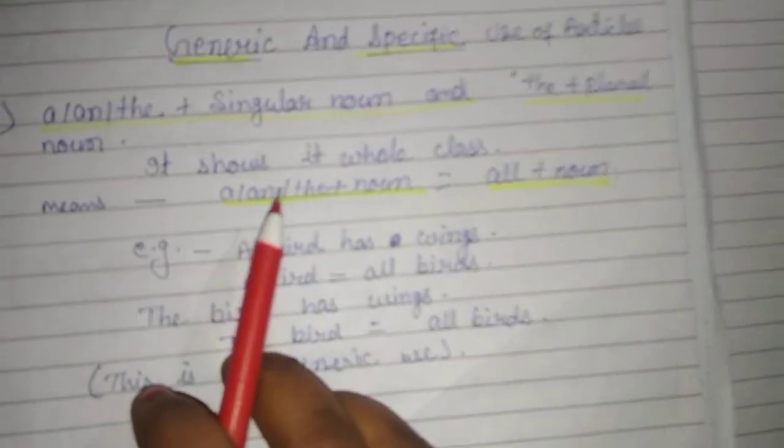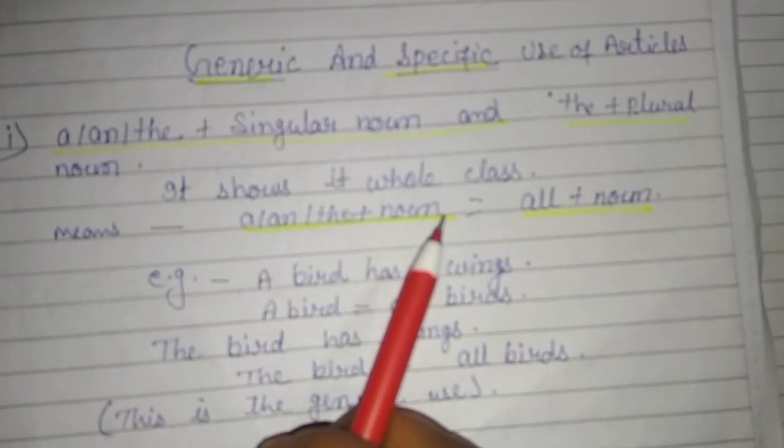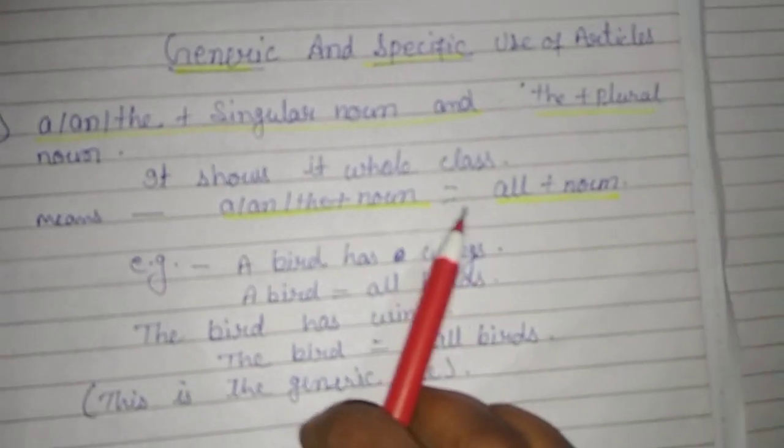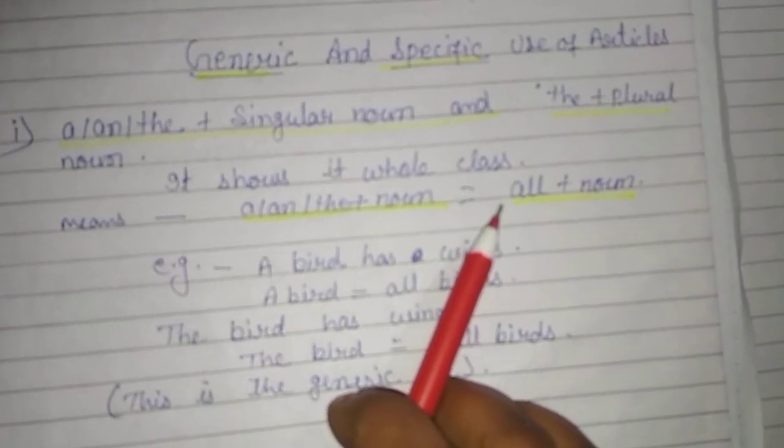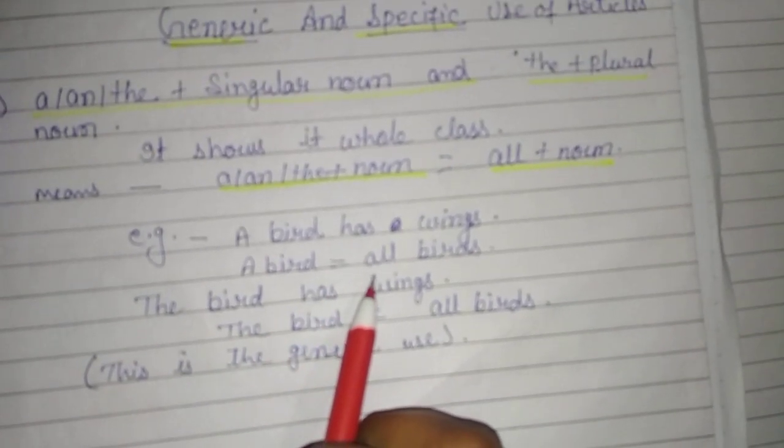A or an plus noun, or the plus noun, it means all. For example, 'A bird has wings' - a bird means what? All birds have wings. The bird has wings - the bird means what? All birds. This is the generic rule.